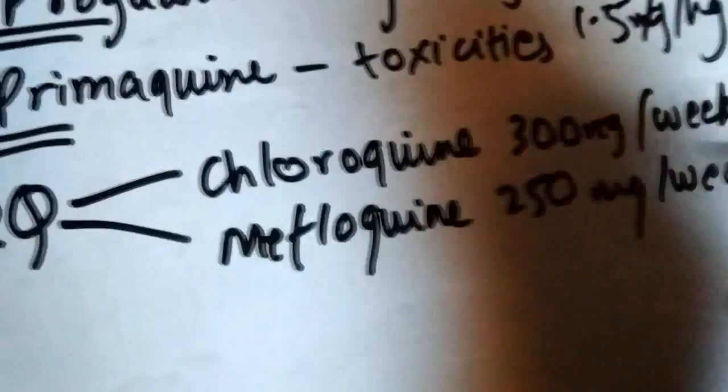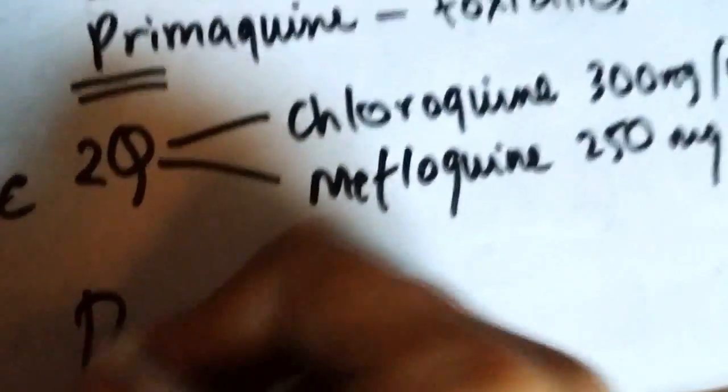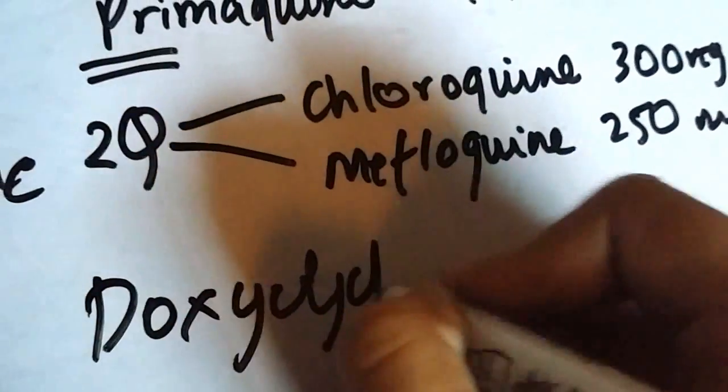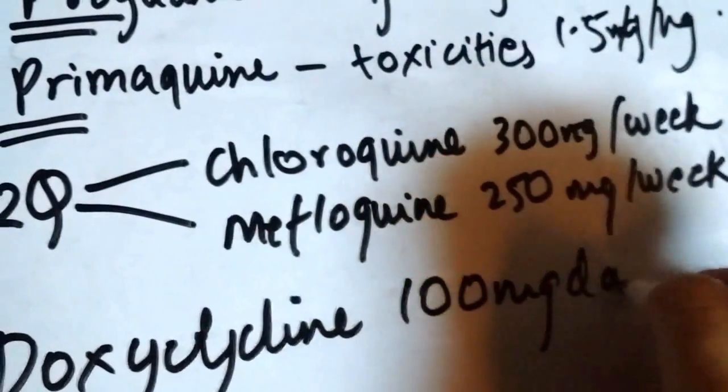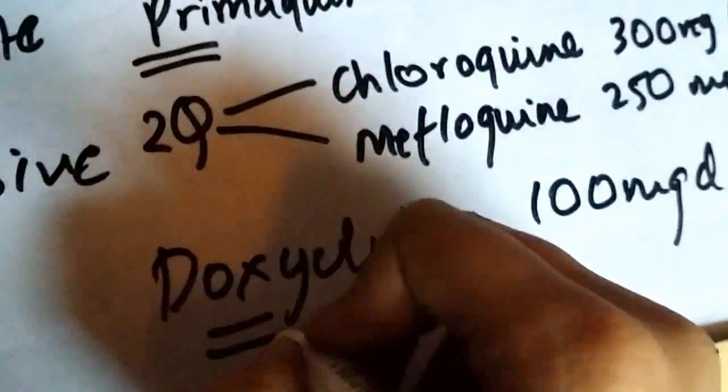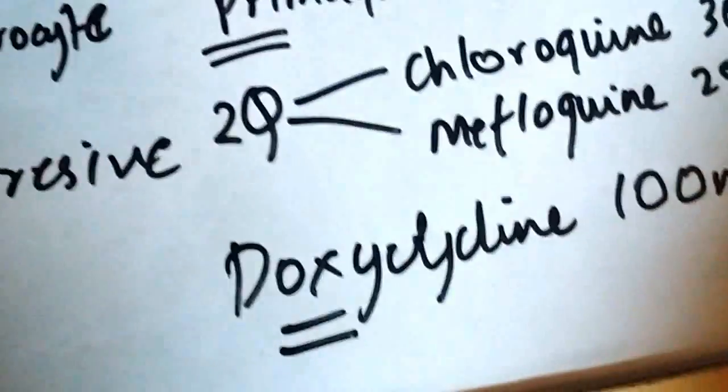Mefloquine is given 250 milligrams every week. Then you have doxycycline, given 100 milligrams daily. Doxy has an X, prophylaxis has an X.